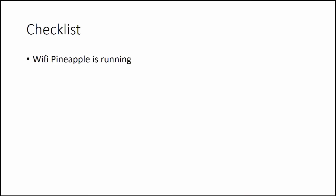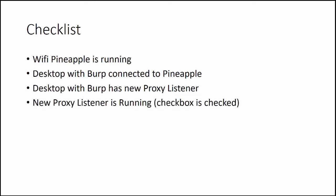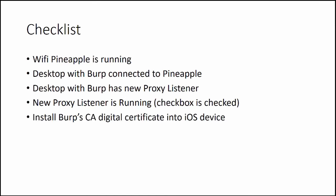Let's go through our checklist. First, we have our Wi-Fi Pineapple running. Then we have our desktop with Burp running inside of that, connected to the Wi-Fi Pineapple. We just configured Burp Suite to listen on a new proxy listener. Make sure that that proxy listener is actually running — you can verify this by looking at the checkbox and making sure that it does indeed have a check mark. Next, we're going to install Burp's CA digital certificate into our iOS device and then we can start sniffing HTTPS traffic.